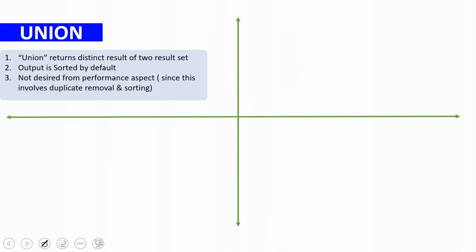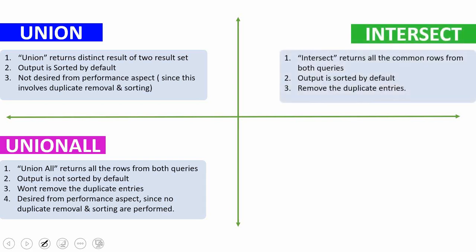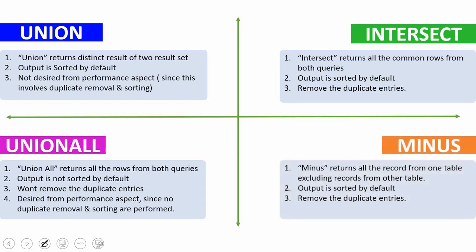To summarize: union and union all both consolidate results into a single result set, but union removes duplicates and sorts the records by default, whereas union all does not remove duplicates and does not sort by default. Intersect gives the common records between both queries — output is sorted and duplicates are removed. Minus gives the result set of the first query excluding the result set of the second query — output is also sorted and duplicates are removed.